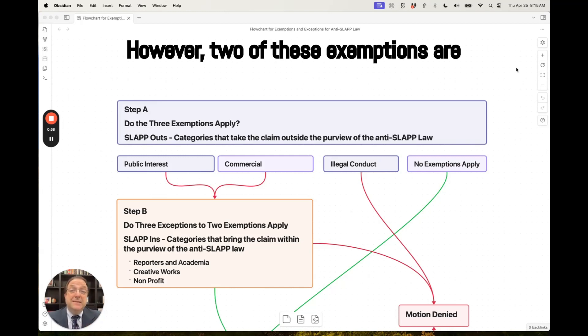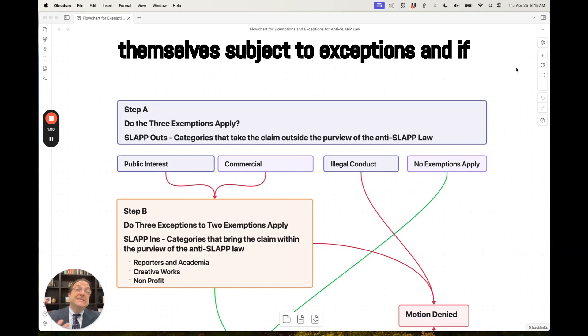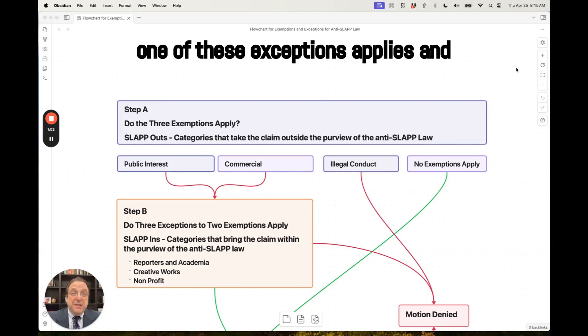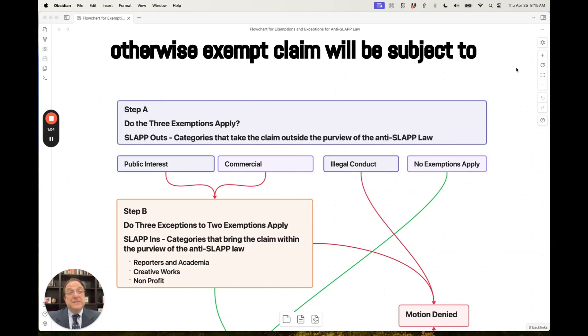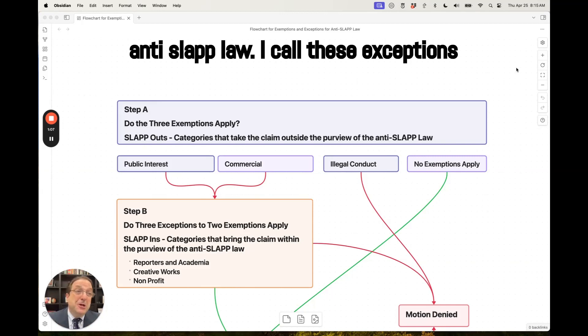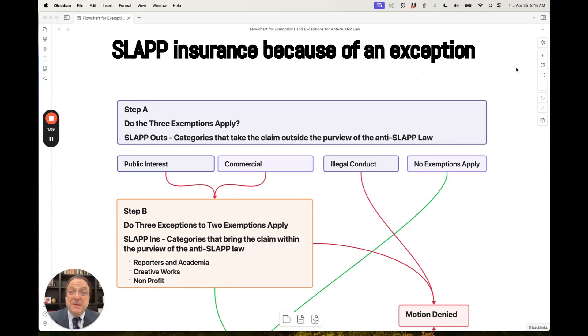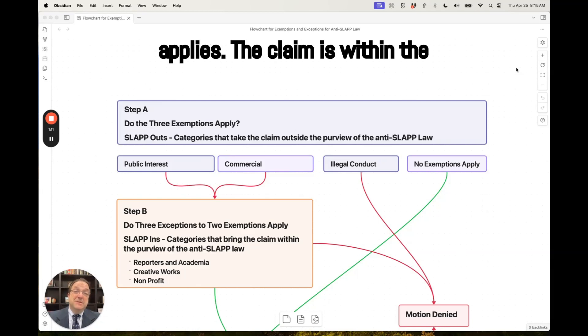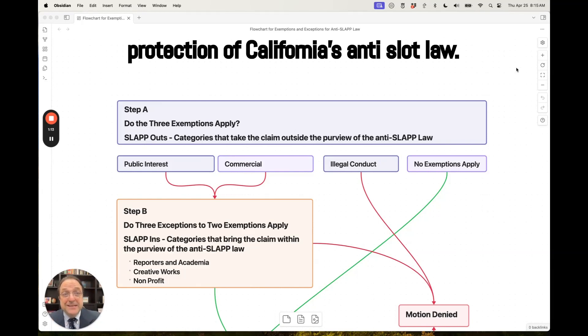However, two of these exemptions are themselves subject to exceptions, and if one of these exceptions applies, an otherwise exempt claim will be subject to or within the purview of California's anti-SLAPP law. I call these exceptions SLAPP ins because if an exception applies, the claim is within the protection of California's anti-SLAPP law.